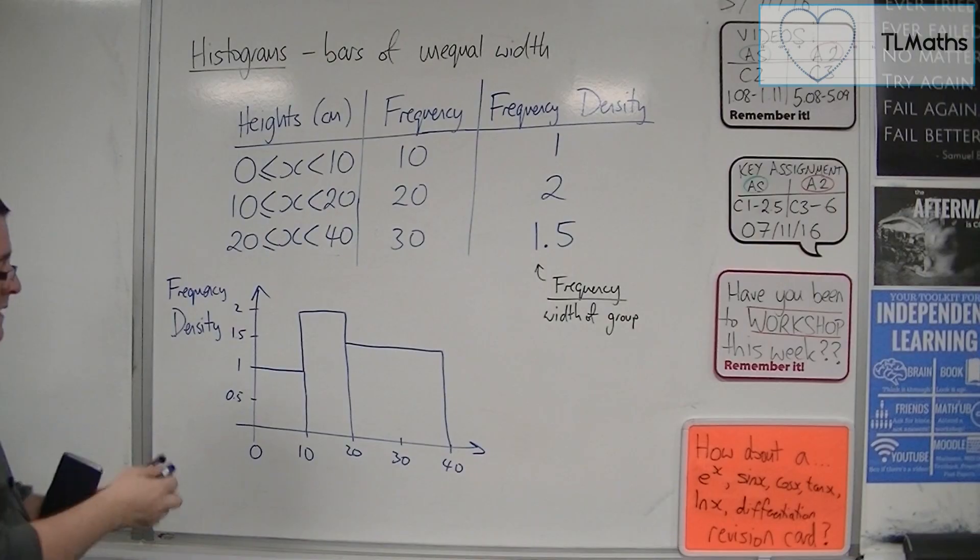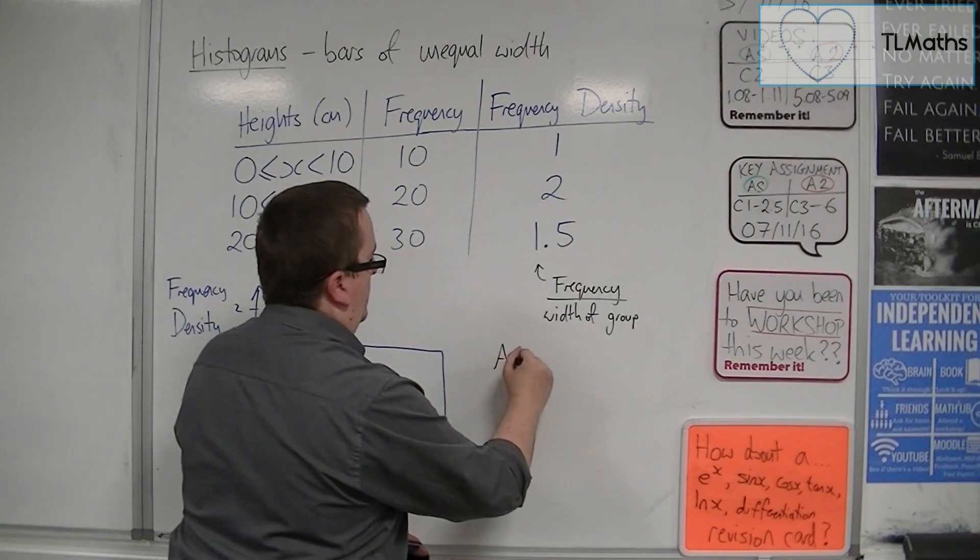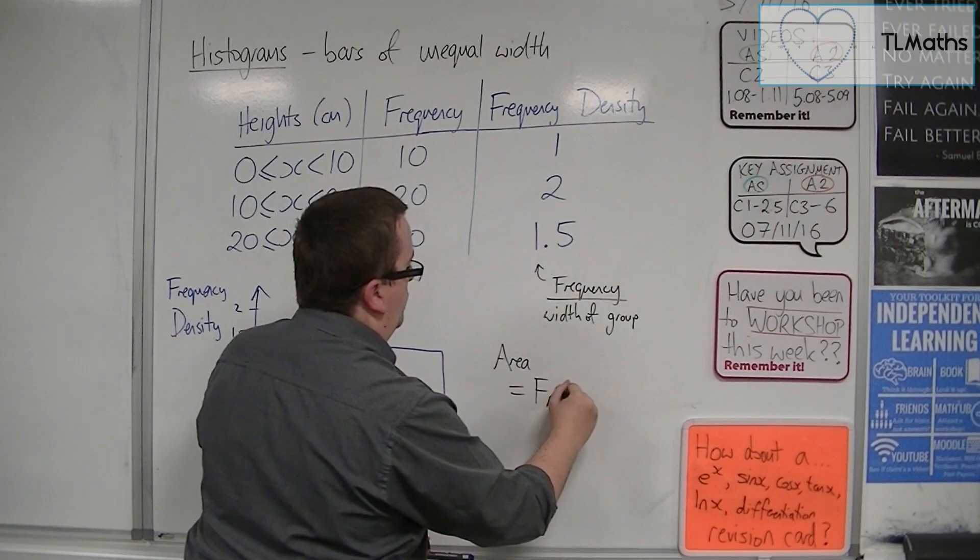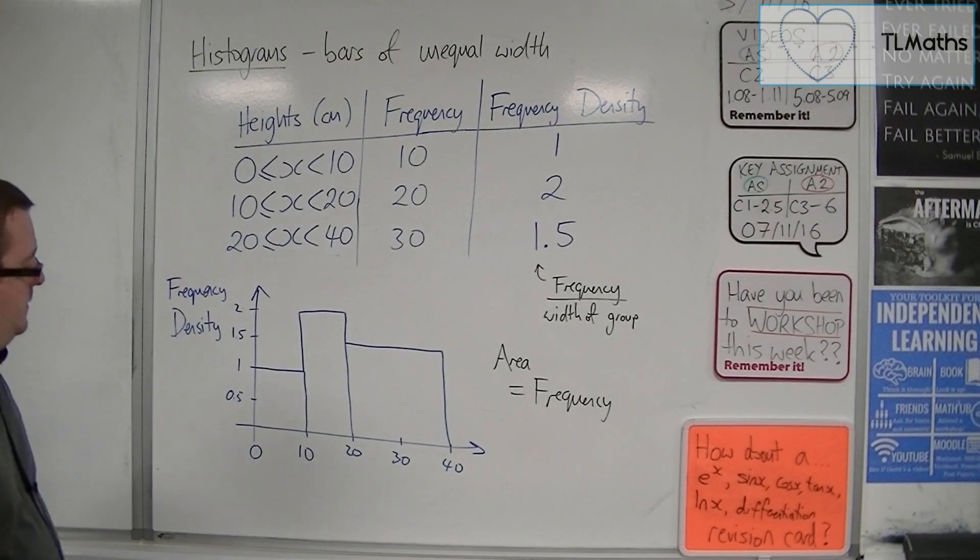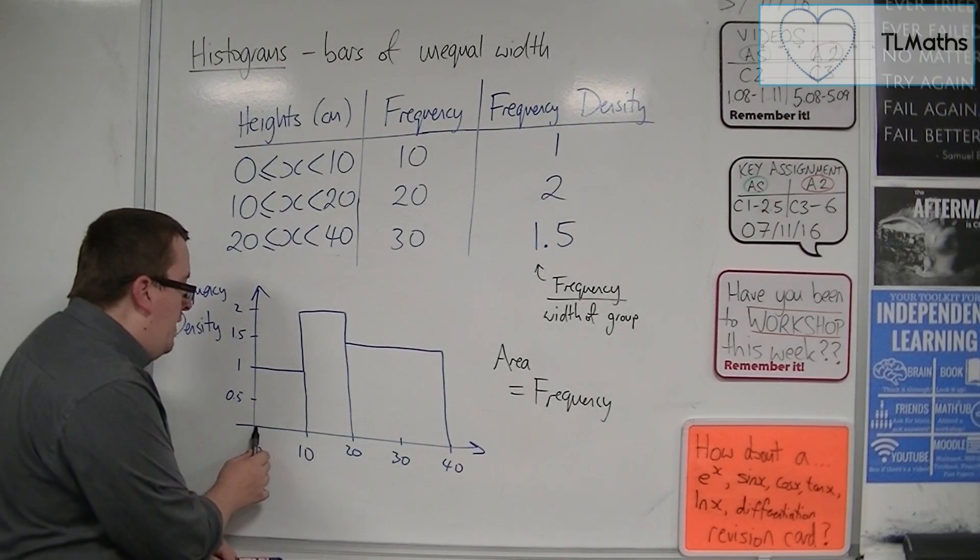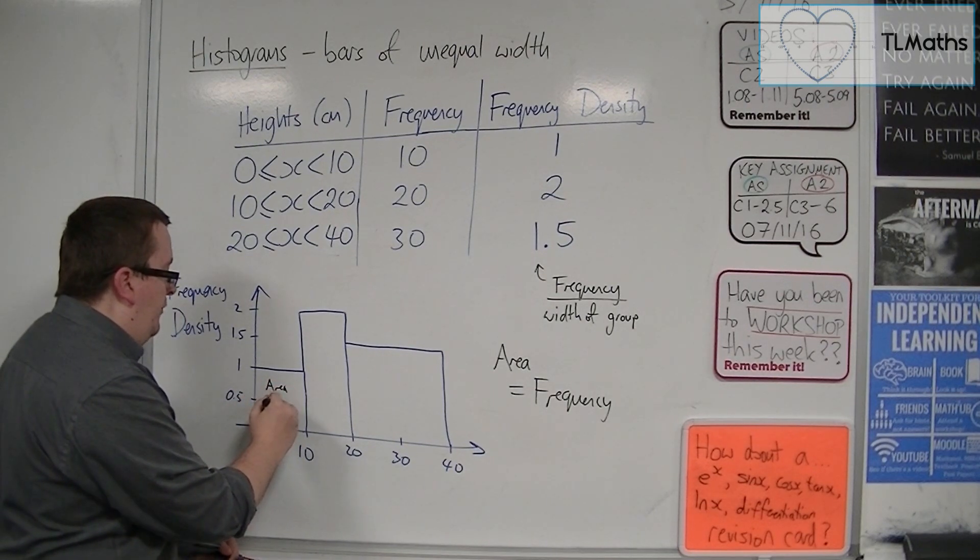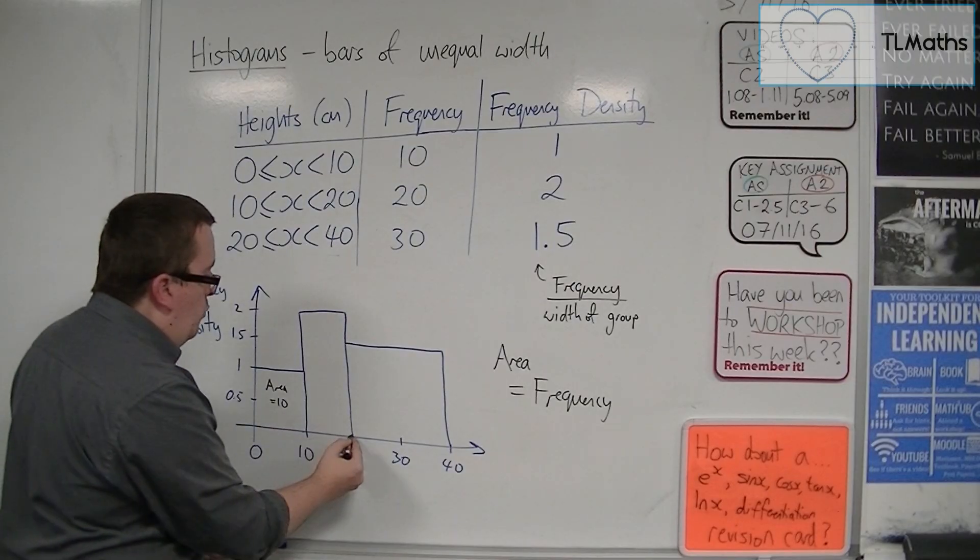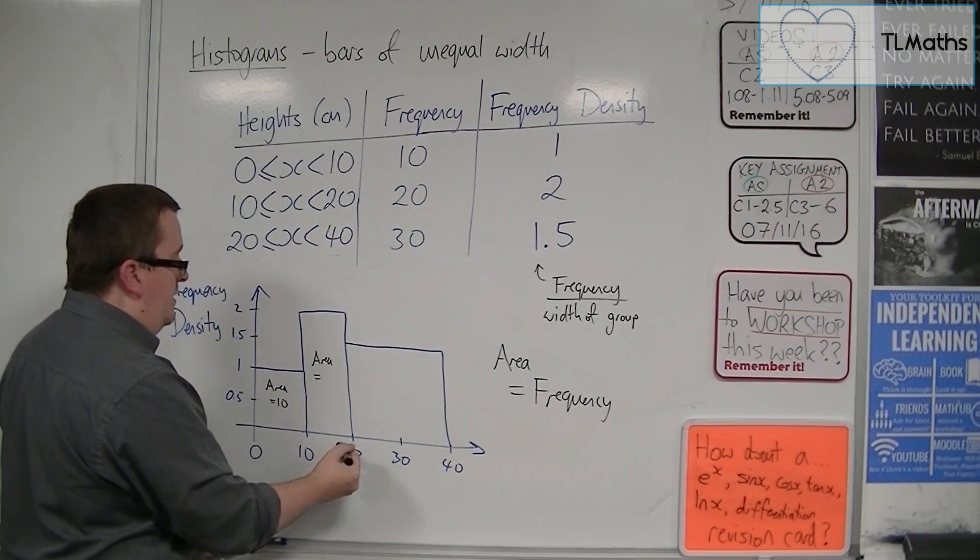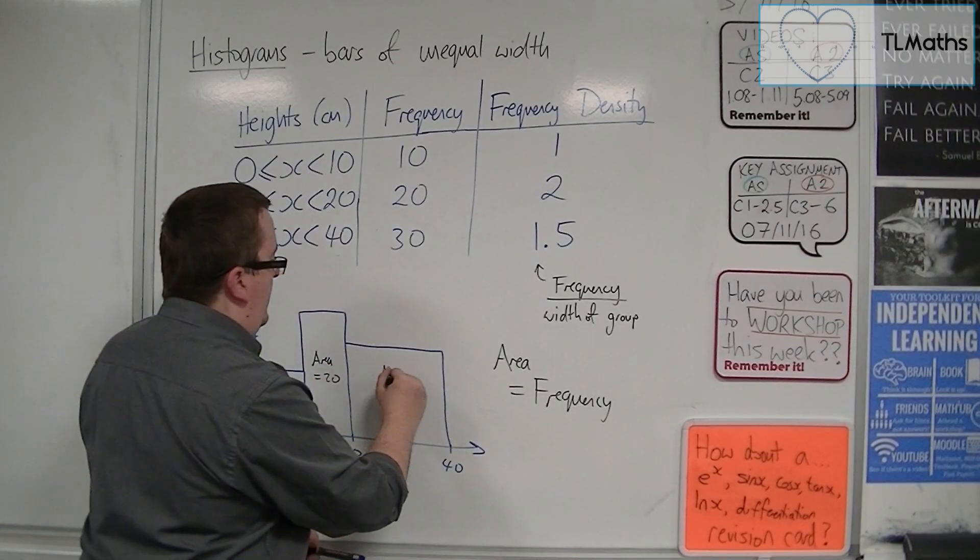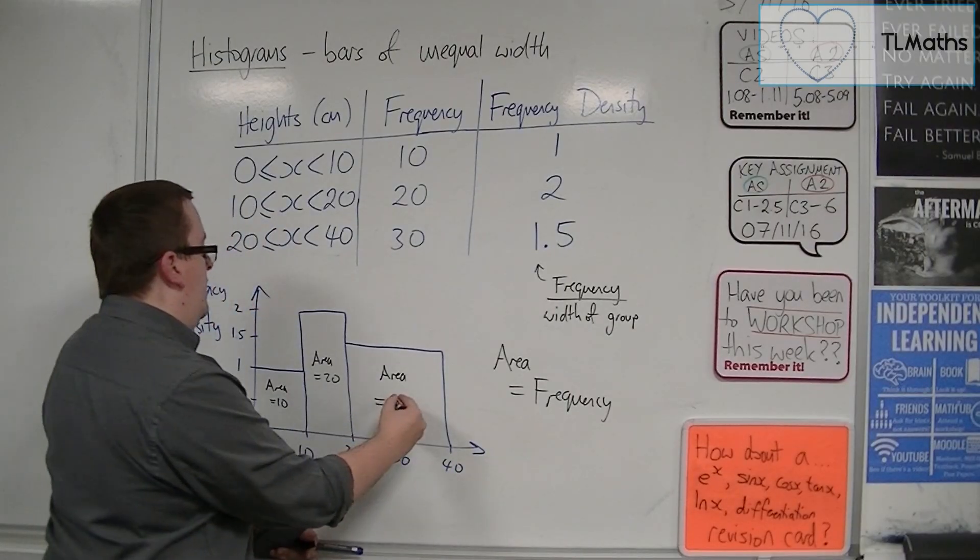So what you'll find is actually that the area is equal to the frequency. This comes up again with normal distribution. So here you've got a width of 10 times by 1, and so the area equals 10. Here you've got a width of 10 and a height of 2. So area is 10 times 2, so 20. And here the area is 20 times 1.5, which makes the 30.